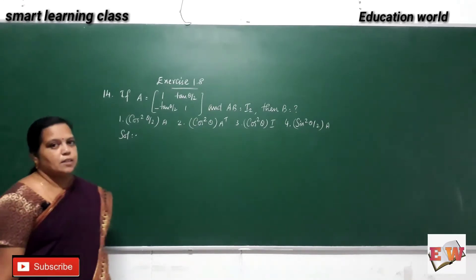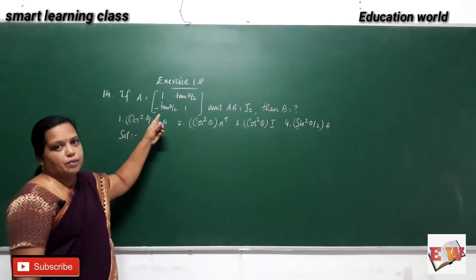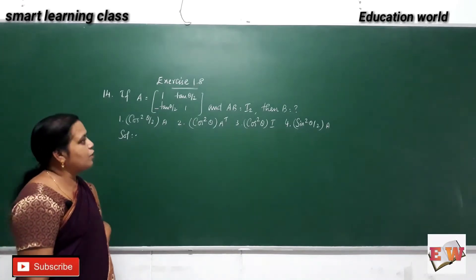Hi students, let us see the 14th summary exercise 1 point A. If A is a 2 by 2 matrix, AB is equal to 2 by 2 identity matrix, then what is that B?